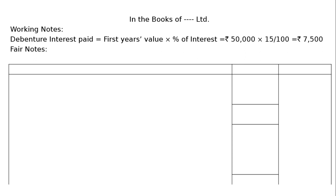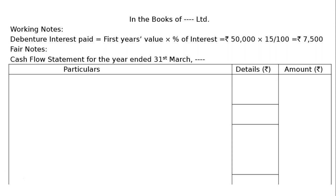Now the cash flow statement for the year ended 31st March, current year. Particular details and amount in rupees. The first section is cash flow from operating activities.